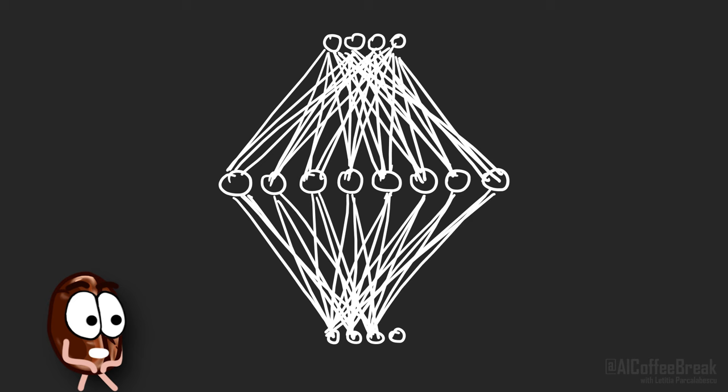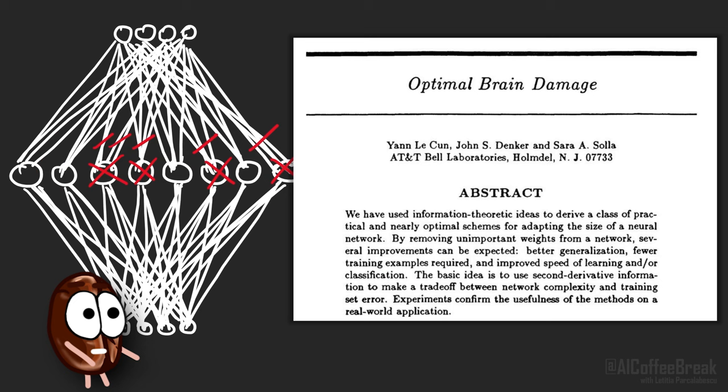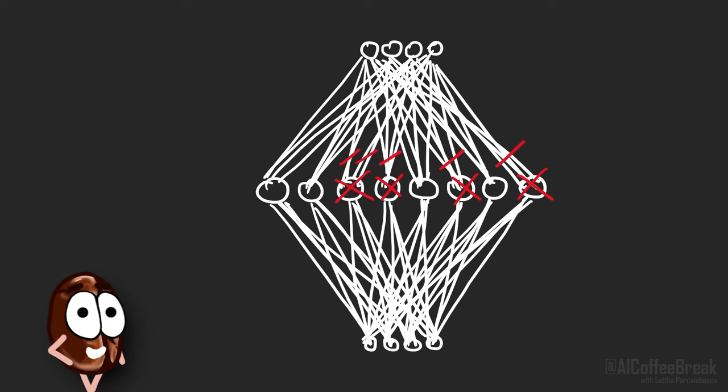But the idea of sparse neural networks, where only a small fraction of the model parameters activate, such as 5% or 10%, goes back to 1989. In theory, sparsity could save up all the computations that the turned-off neurons do not have to do anymore. And also, it would speed up the loading time of the model, since you do not need to load all the unused weights.